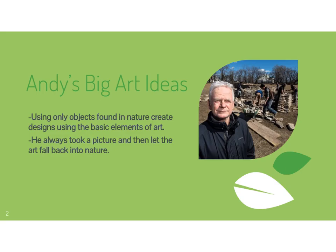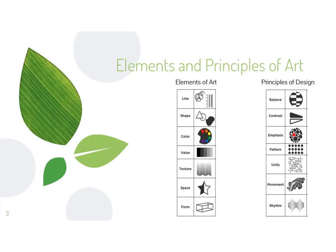Before we move on, we need to talk about the elements and principles of art because we're going to be making some designs and need to be paying attention to these things. We've talked a lot about the elements of art in class — we've done whole projects about line and shapes, we know our colors, and we've explored value, which is taking one color and making it from light to dark. We've also covered texture, space, and form — form being those 3D objects.